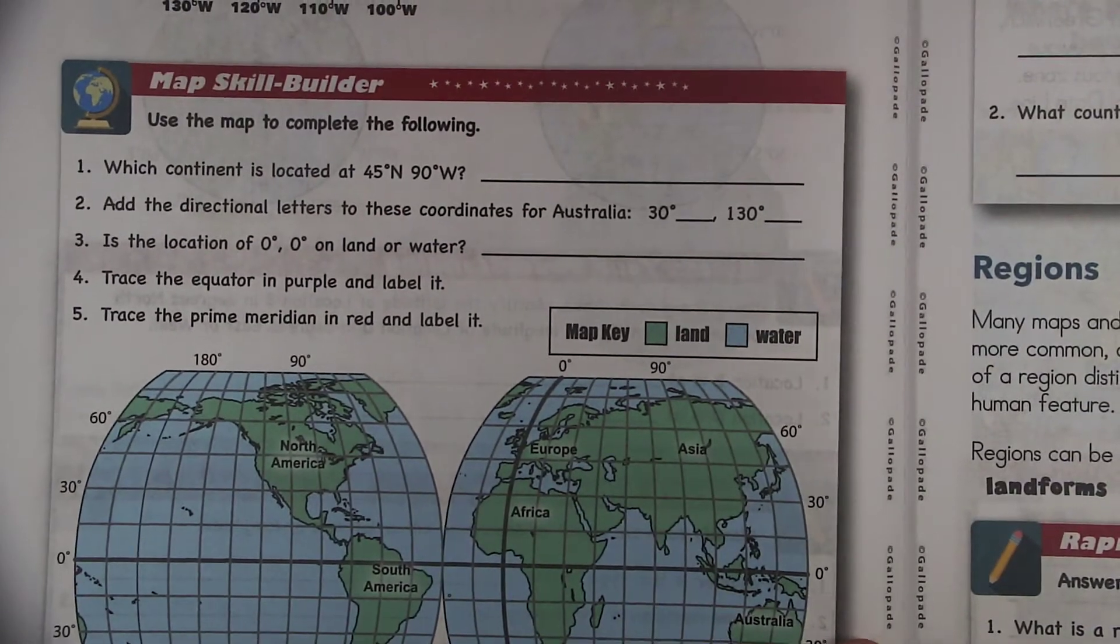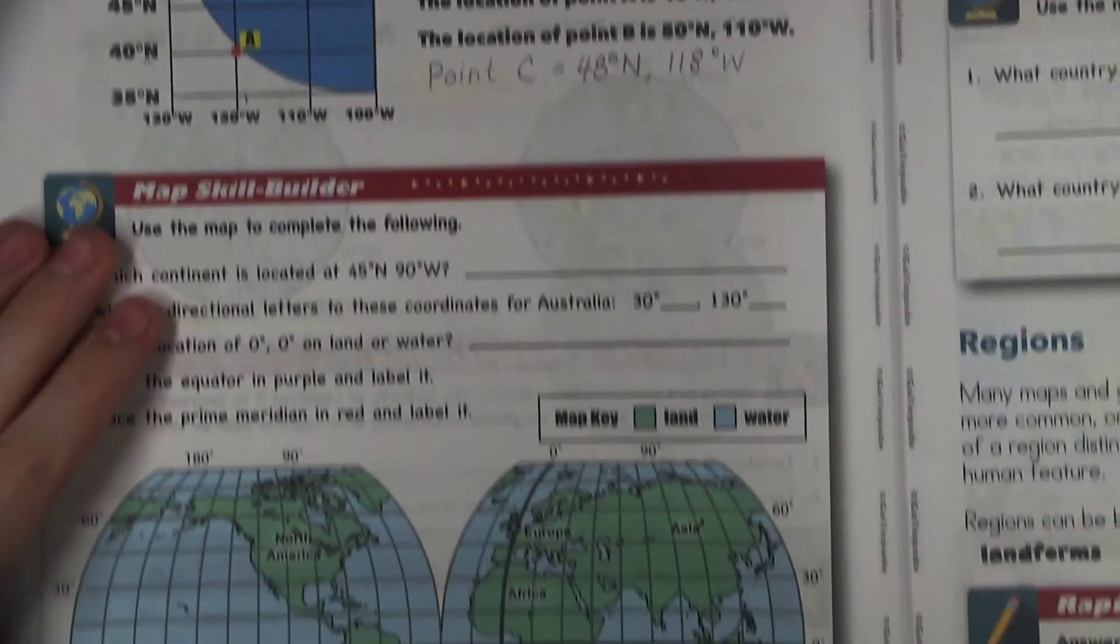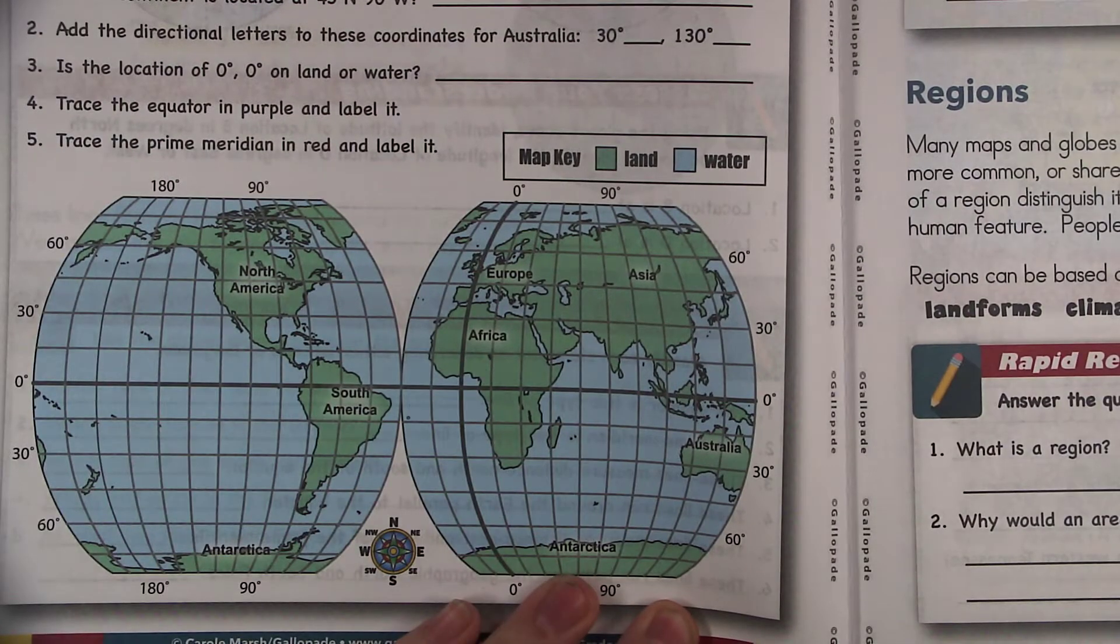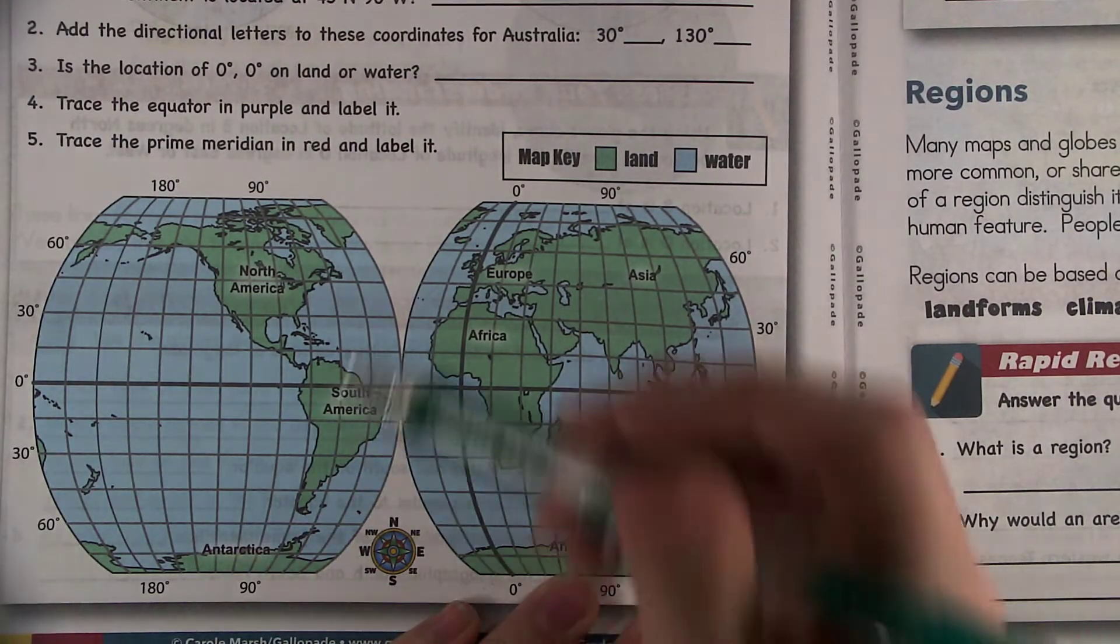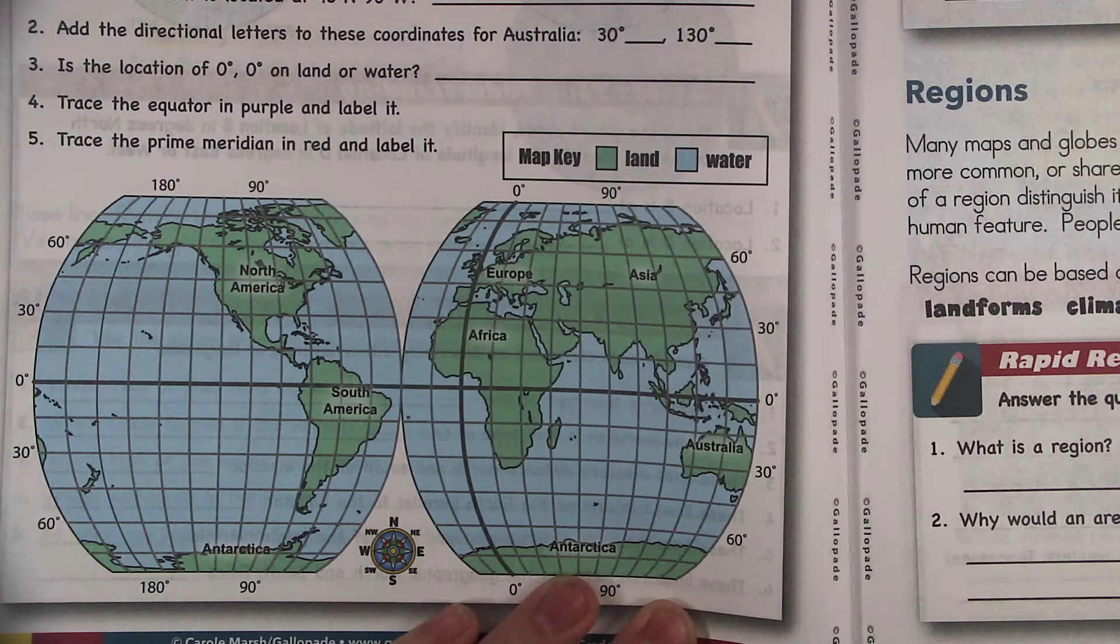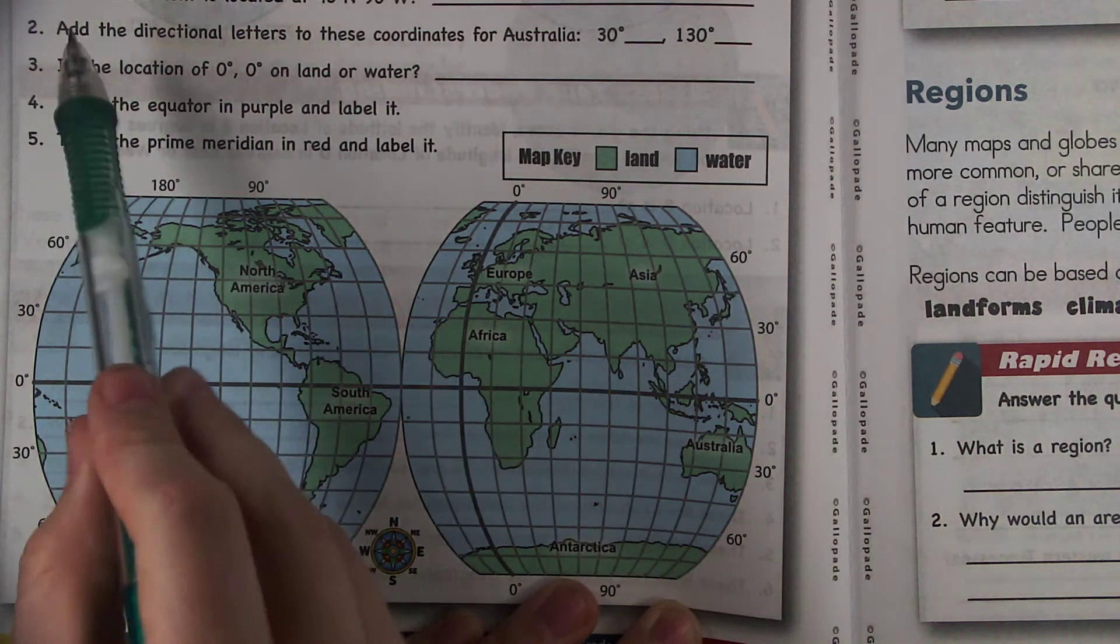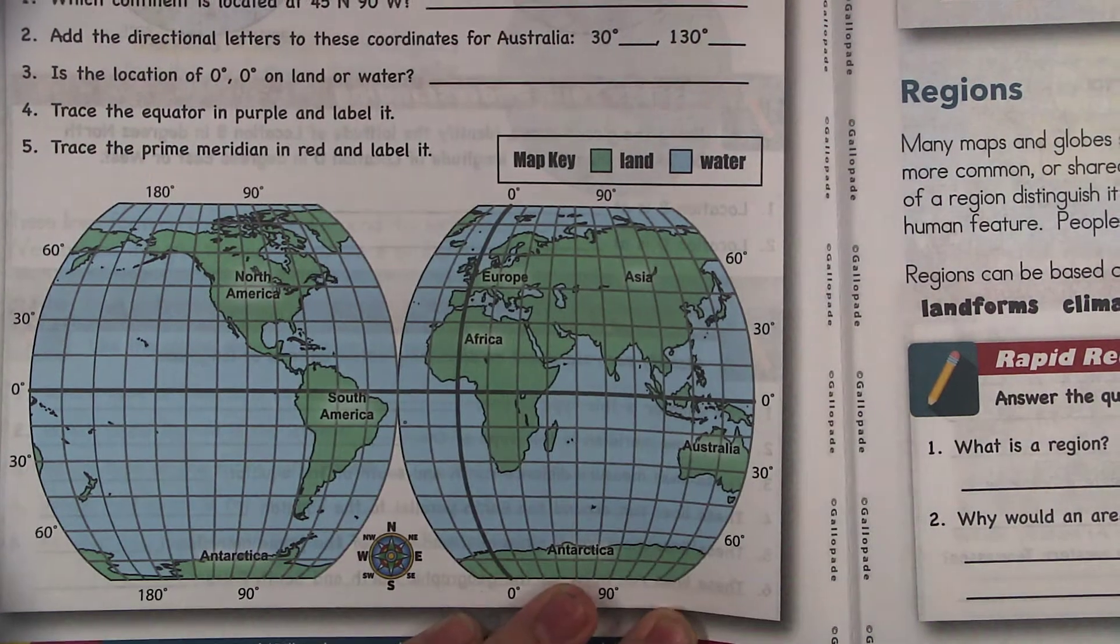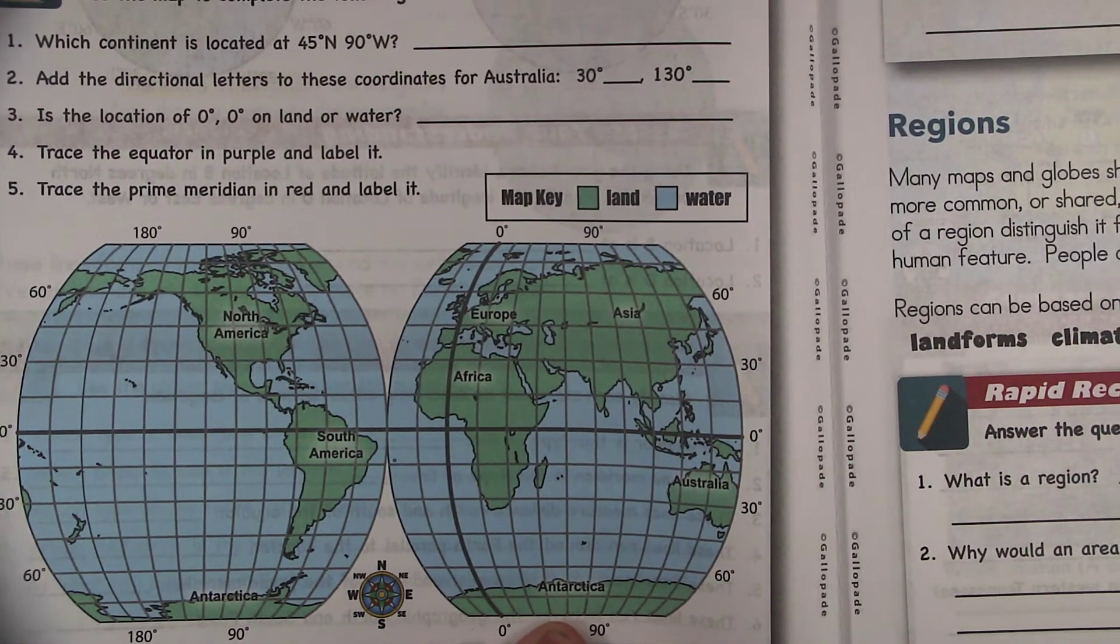So speaking of making it a little bit harder, this is just a small section. You can do it with the entire earth. So this is the entire earth. The reason why it's shaped this way is because maps kind of stretch out everything. So this more accurately shows a grid of the earth. It says which continent is located at 45 degrees north and 90 degrees west and I'll show you how we do that.